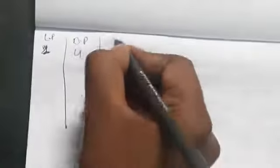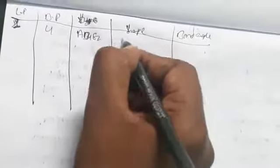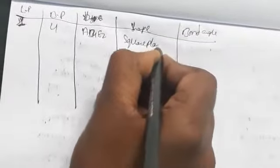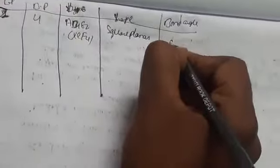With two lone pairs and four bond pairs, the molecule type is AB4E2 and the shape is square planar. An example is XeF4. The bond angle is 90°.